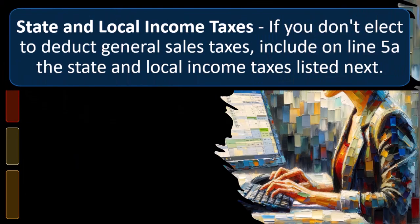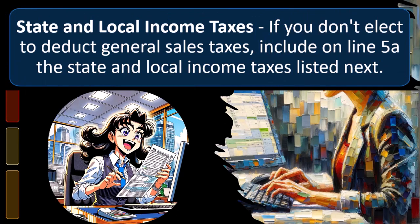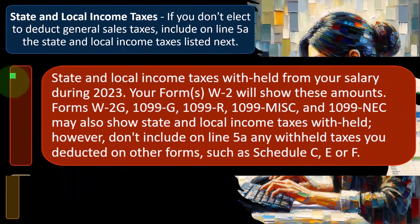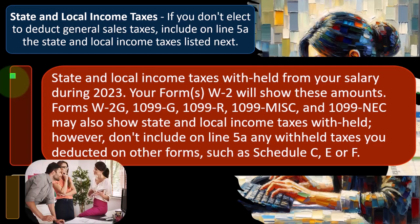State and local income taxes: if you don't elect to deduct general sales taxes, include on Line 5A the state and local income taxes listed next — specifically, state and local income taxes withheld from your salary during 2023. Most people, when they pay their taxes, similar to the federal income tax system, if you have a state tax system, will have withholdings.